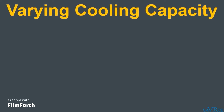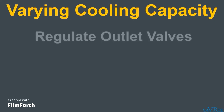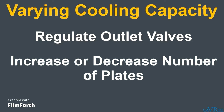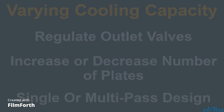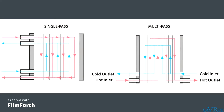There are several ways to vary the cooling capacity of a heat exchanger. One way is to regulate the outlet valves to increase or decrease flow — useful because no dismantling is required. Another way is to increase or decrease the number of plates in the plate stack; more plates equals more cooling, and less plates equals less cooling. The final method is to use a single-pass or multi-pass design. Single-pass heat exchangers allow the two flowing mediums to flow past each other only once, while multi-pass heat exchangers allow them to flow past each other several times. Most plate heat exchangers use the single-pass design.